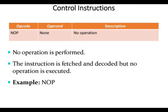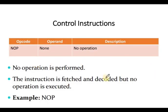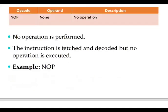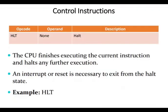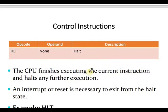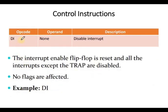Some control instructions: NOP — no operation. The instruction is fetched and decoded, but no operation is executed. HALT — the CPU finishes executing the current instruction and halts any further execution. DI — disable interrupt: the interrupt enable flip-flop is reset and all interrupts except the TRAP are disabled.